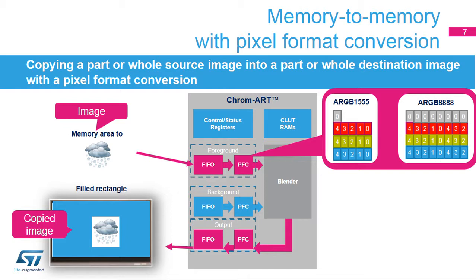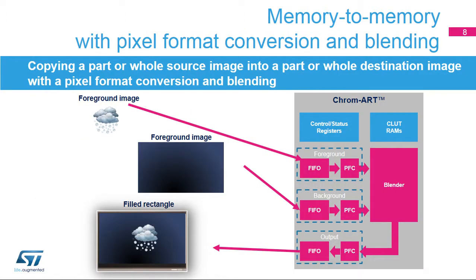Memory-to-memory mode with pixel format conversion is used to do the same type of copy as memory-to-memory mode but with a pixel format conversion. It can copy an RGB 565 image into an RGB 888 image without having to use the CPU. Memory-to-memory mode with pixel format conversion and blending is used to blend a part or whole source image with a part or whole destination image with a different pixel format. This is widely used to draw bitmap icons having transparency or fonts.